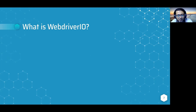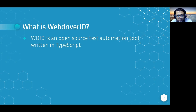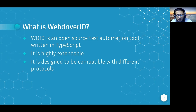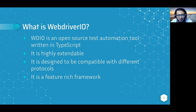WebDriver.io is an open source test automation tool written in TypeScript, and you can also use it with JavaScript. It is highly extendable — you can easily use complex sets of commands and add different helper methods to enhance your tests. It is designed to be compatible with different protocols, supporting both the WebDriver protocol and the Chrome DevTools protocol, which you can run using Puppeteer. It is also a feature-rich framework with plugins, services, and reporters created by the WebDriver.io team and the community.